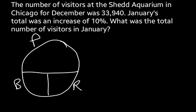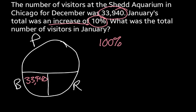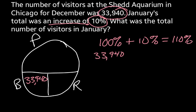Looking at our information, we're given 33,940 and an increase of 10%. Now 33,940 represents the base, so we plug that in. We have a rate of 10%, but this is an increase. So we think of it as 100% of our December total plus the increase of 10%, which altogether equals 110%. This is the rate we're going to use, converted to a decimal: 1.1.